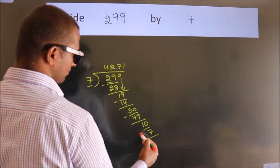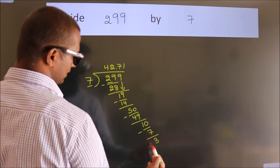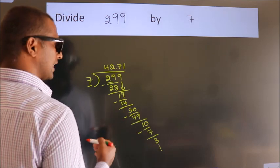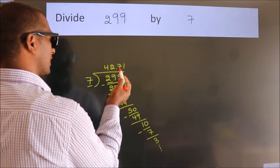Now we subtract. We get 3. And the division continues. It is enough if we do up to 2 decimal places.